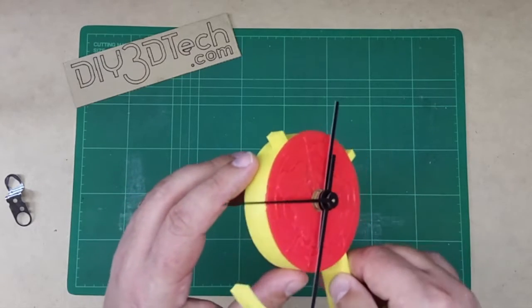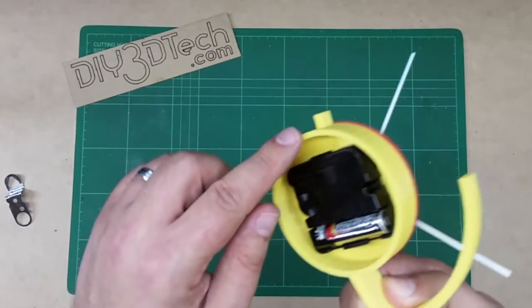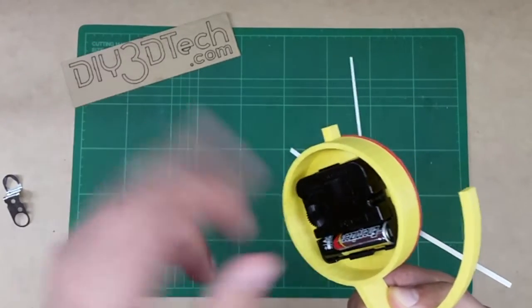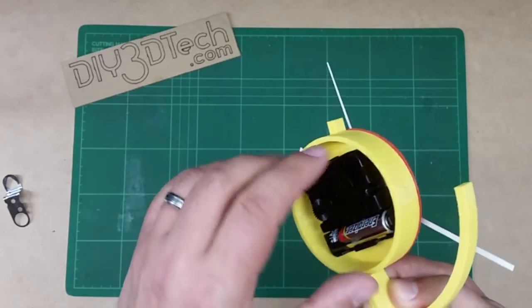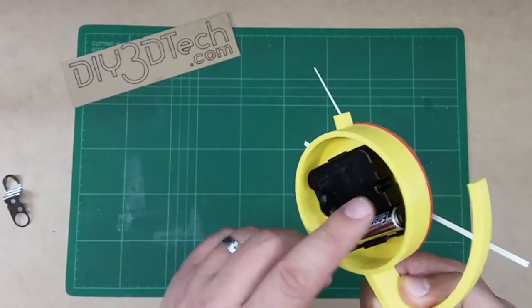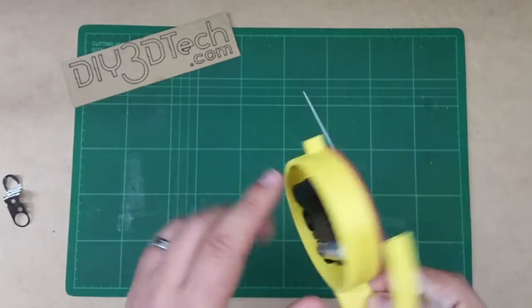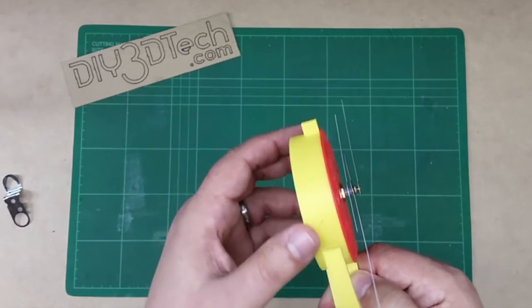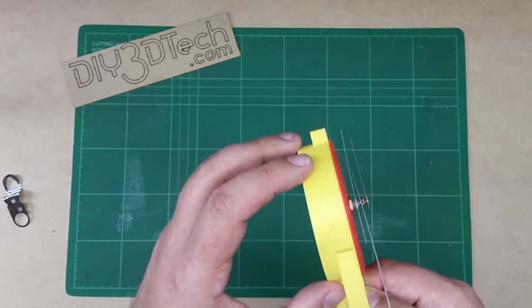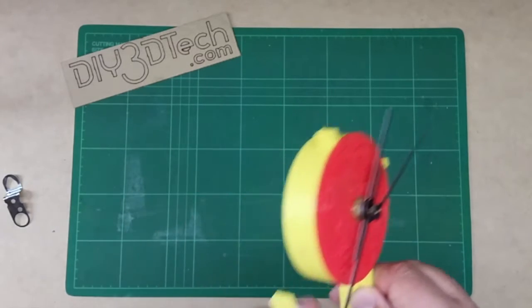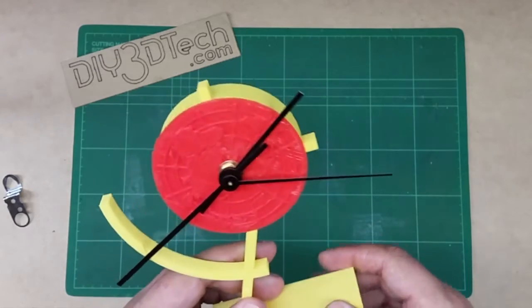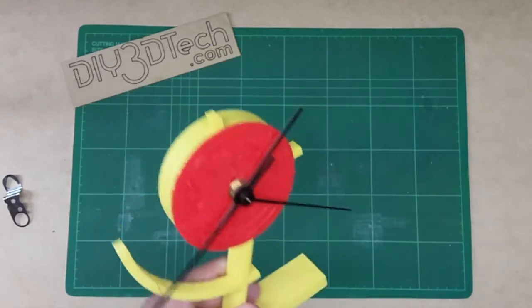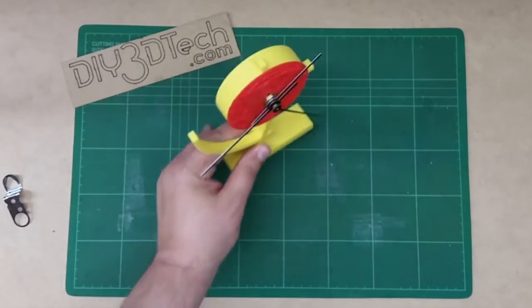It might've been done in Tinkercad or OpenSCAD, but the number of functions around the outside, I forget what they're called. It's FN in OpenSCAD to create the circle is a little bit noticeable and here too. So it'd have been nice if that would have been a little bit more rounded with a higher number. And what I might do is actually redesign this a bit in OpenSCAD to be a higher resolution. Outside of that, this is almost commercial quality.